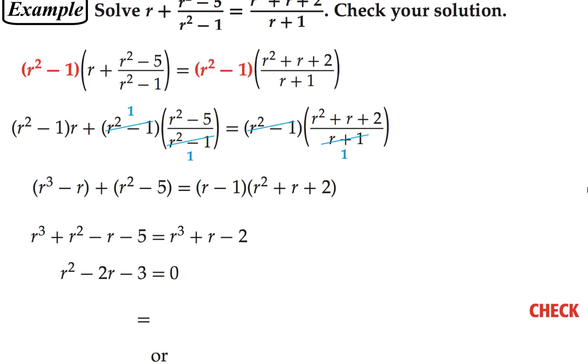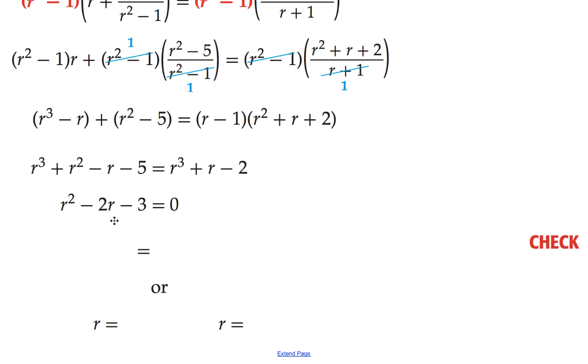Now this is a quadratic equation, and we have to figure out how to solve that. So hopefully you remember how to solve quadratic equations. This one actually factors. Factors of 3 that differ by 2 are 3 and 1. Signs are different. The bigger one is minus, so it's going to be an r minus 3 or an r plus 1.